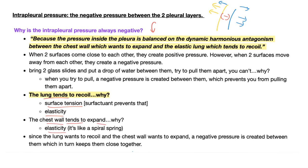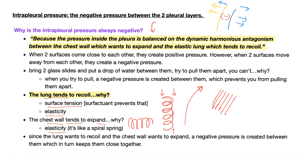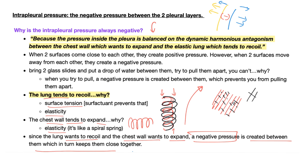This is how your pleura works — two surfaces: parietal pleura and visceral pleura. Visceral pleura covers the lung from the outside; parietal pleura lines the thoracic cavity from the inside, with a very thin pleural fluid in between. The lung tends to recoil due to surface tension and elasticity. The chest wall tends to expand because of elasticity — like a spiral spring. Your chest wall is confined in your body, but if left alone, it tends to expand. As the lungs want to recoil and the chest wall wants to expand, a negative pressure is created in between called intrapleural pressure, which keeps them close together.